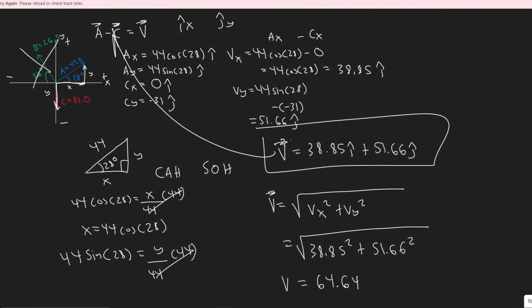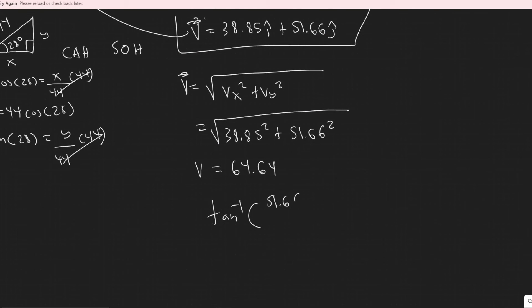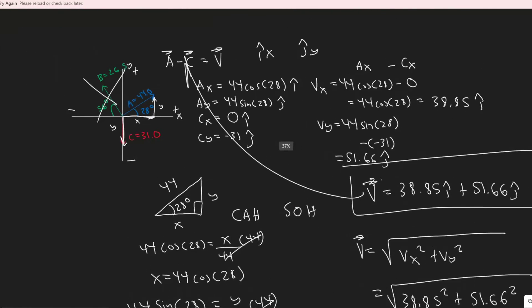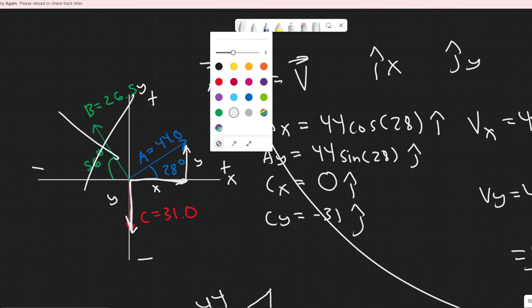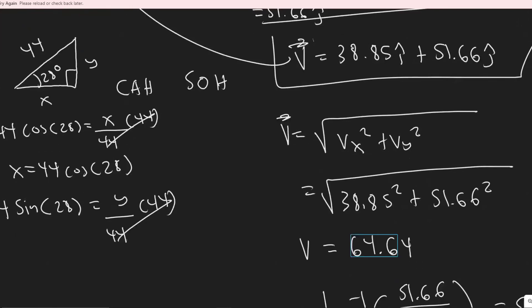And then you can find the direction too. The direction for this theta, you just do the arc tangent of its y component over its x component. In this case, it's 51.66 divided by 38.85. So we have the arc tangent of 51.66 divided by 38.85, which you get 53 degrees. And so basically, this is its magnitude. So if we were to redraw it on the graph, so that's angle 53 degrees. Let me get a different color here. Let's go with pink, I guess. So it would be something like this, because we know the angle is 53 degrees. So it's not perfect, or 53, yeah, 53 degrees. And then its magnitude was this value right here, so 64.64.